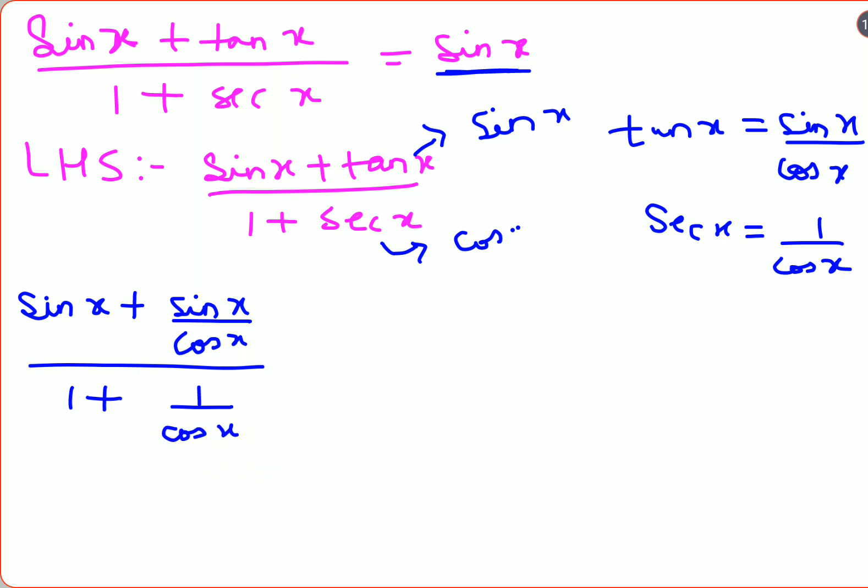Now taking the LCM for both numerator and denominator, we get sin x times cos x plus sin x, all over cos x. Here we have cos x plus 1, all over cos x.